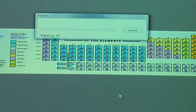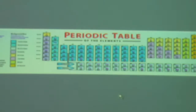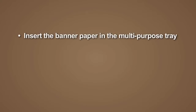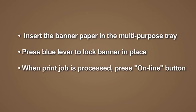Press OK and this print job is processed to our Okie printer. At this point you would step up to the Okie printer, insert the banner paper in the multi-purpose tray, press the blue lever which will lock the paper in place, and when the print job is processed on the Okie printer control panel press the Online button and the print job will be completed.